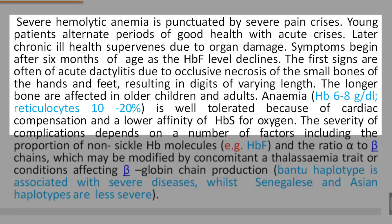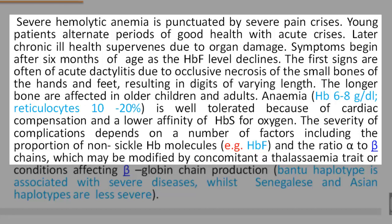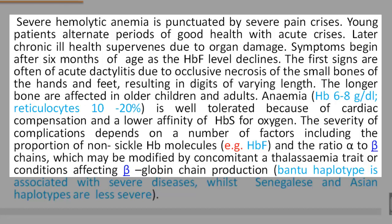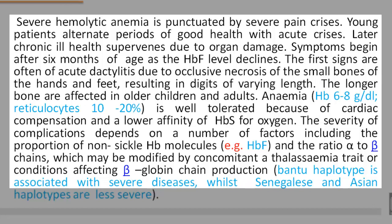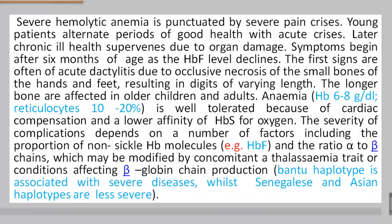The severity of complications depends on a number of factors, including the proportion of non-sickle HB molecules, for example HBF, and the ratio of A to B chains, which may be modified by concomitant alpha-thalassemia trait or conditions affecting B-globin chain production. Bantu haplotype is associated with severe disease, while Senegalese and Asian haplotypes are less severe.